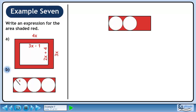In Part B, we have a red rectangle with 3 white circles cut out of it. The radius of each circle is x.